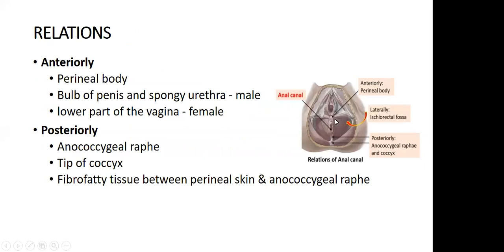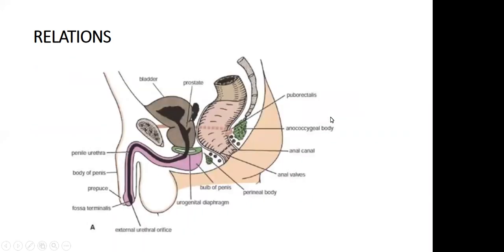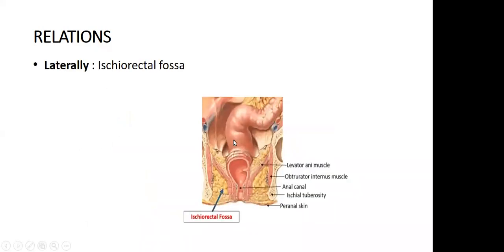The anal canal is anteriorly bounded by the perineal body and the bulb of the penis in males, or the lower part of the vagina in females. Posteriorly, it is bounded by the tip of the coccyx, the anococcygeal raphe, and fibro-fatty tissue. The lateral boundary is formed by the ischiorectal fossa, which allows the anal canal to expand during defecation.